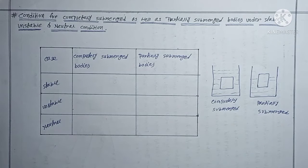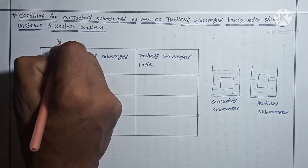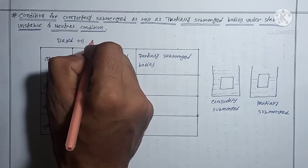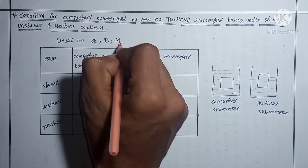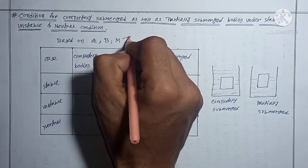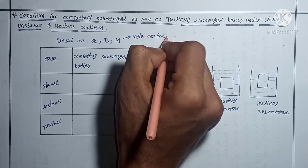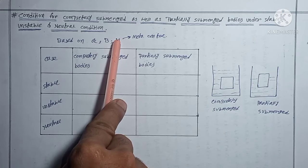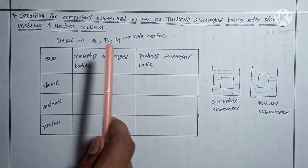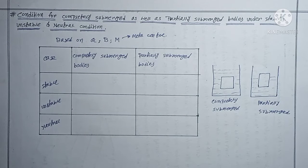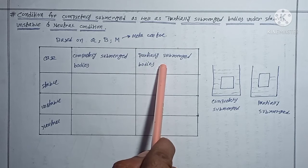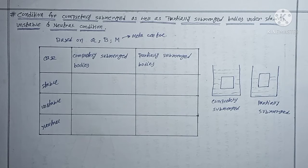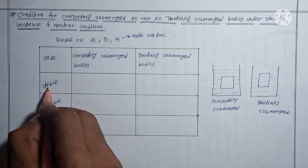Now remember: the conditions here are based on metacenter. I will write the conditions based on center of gravity (represented by G), center of buoyancy (represented by B), and metacenter (represented by M). Remember that metacenter applies only to partially submerged bodies, not to completely submerged bodies. Students sometimes wrongly consider metacenter for both cases, but metacenter is only for partially submerged bodies.